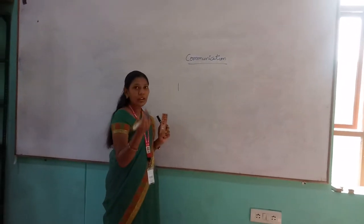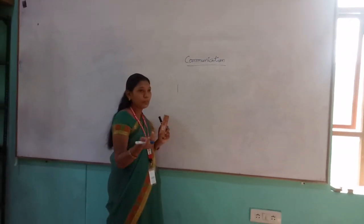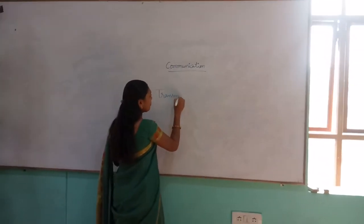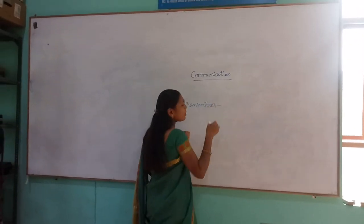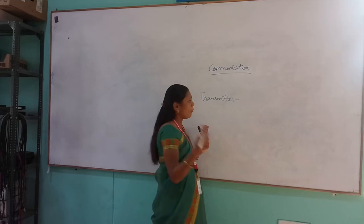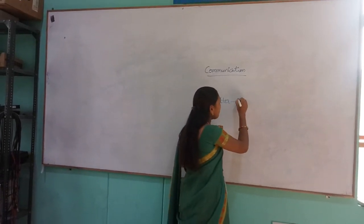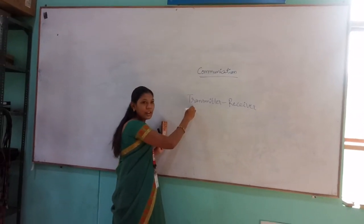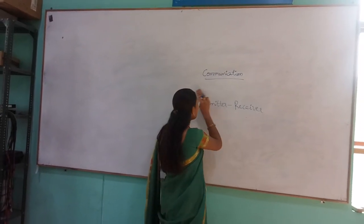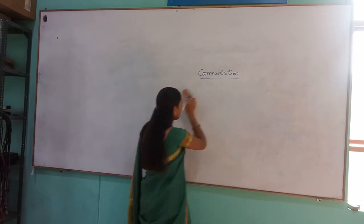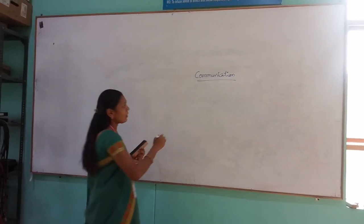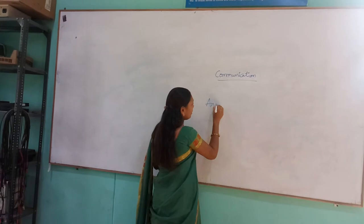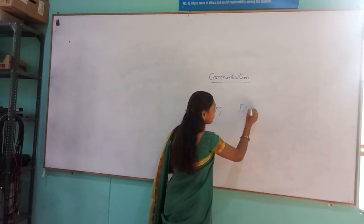So mainly communication is nothing but sharing knowledge or information from one person to another person. The person who is talking will become the transmitter, and the person who is listening or where the voice signal is being received is nothing but called as the receiver. So this is the person who is talking becomes the transmitter and the person who is listening becomes the receiver. So in this we are having types of communication — we will be learning about analog communication and also digital communication.